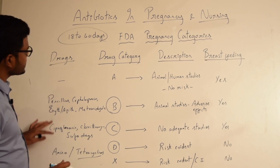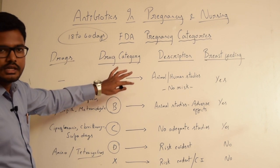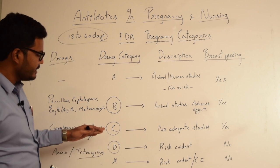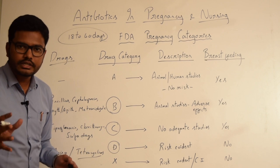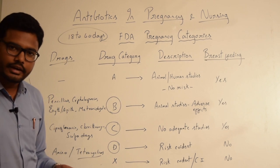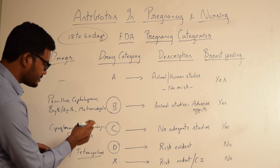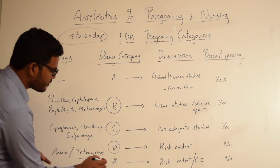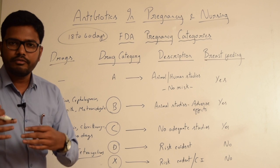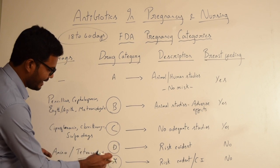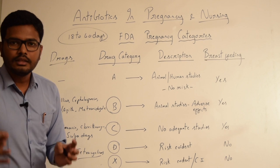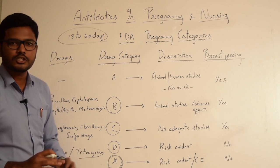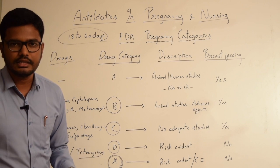There is a major difference between category D and category X. Category D drugs demonstrate clear-cut effects on the fetus in animal or human studies; however, we can still prescribe them when benefits outweigh the risks. In contrast, category X drugs should never be prescribed to pregnant patients regardless of potential benefit, because the risks always outweigh benefits. Category X drugs are absolutely contraindicated in pregnancy and during lactation.